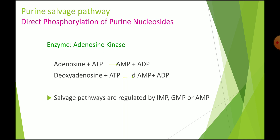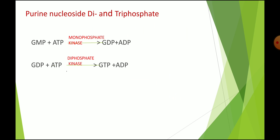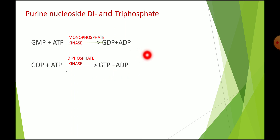These salvage pathways are regulated by IMP, GMP, or AMP. PRPP is the donor of ribose phosphate. Nucleoside di- and triphosphates can also be synthesized: GMP combines with ATP in the presence of monophosphate kinase to form GDP and ADP, and GDP again combines with ATP in the presence of diphosphate kinase to form GTP and ADP. So di- or triphosphates can also be obtained through this salvage pathway.